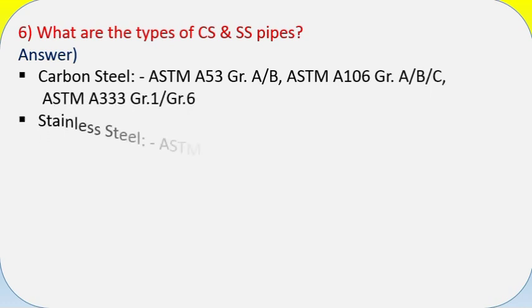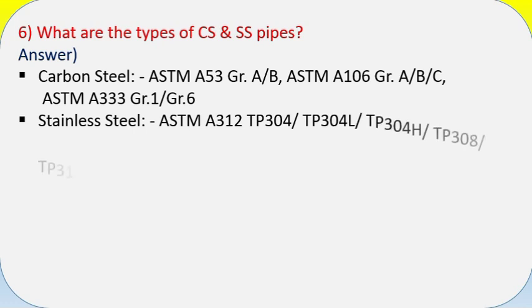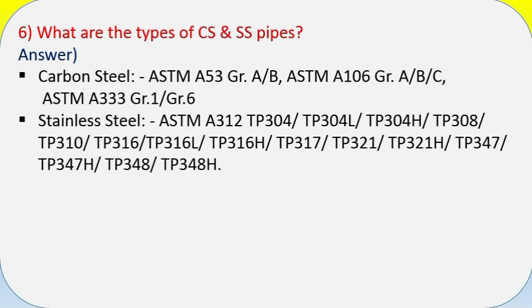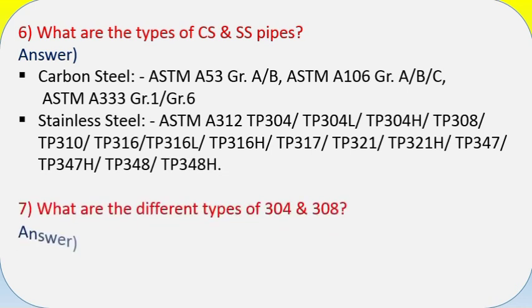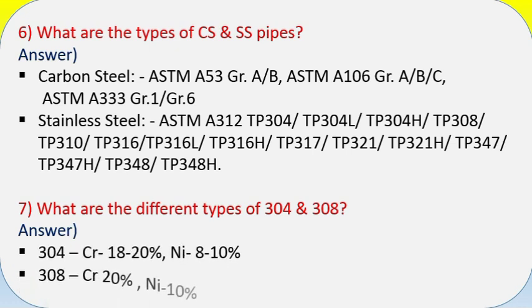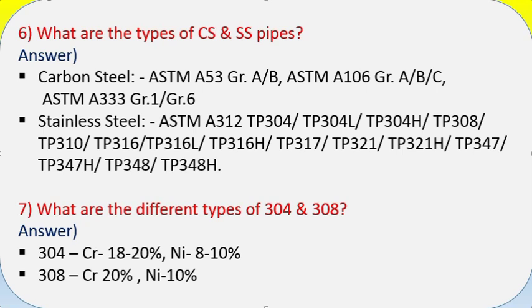Question 6: What are the types of CS and SS pipes? Answer: Carbon steel — ASTM A53 Gr. A/B, ASTM A106 Gr. A/B/C, ASTM A333 Gr. 1/Gr. 6. Stainless steel — ASTM A312 TP 304, TP 304L, TP 304H, TP 308, TP 310, TP 316.